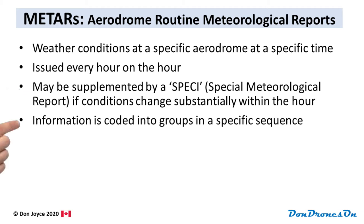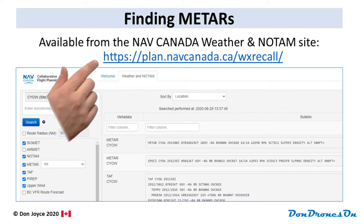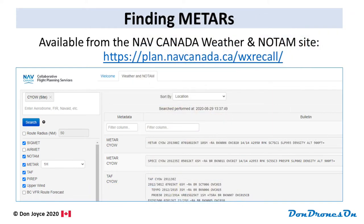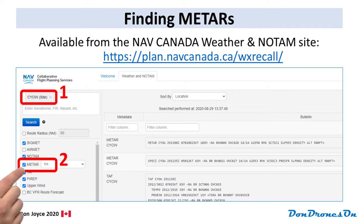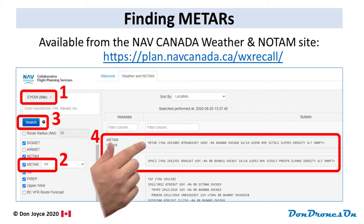METARs consist of information coded into groups in a specific sequence. How do you find a METAR? They're available from the NAV Canada Weather and NOTAM site, and we have a link directly to this site in the DronePilot Canada app. Once on the site, you enter either an aerodrome code — I've entered CYOW in this case — or an actual airport location like Kingston, and select it from a list. Make sure your METAR button is selected, then hit Search, and your METARs appear on the right-hand side. In this case, we have both a METAR and a SPECI.